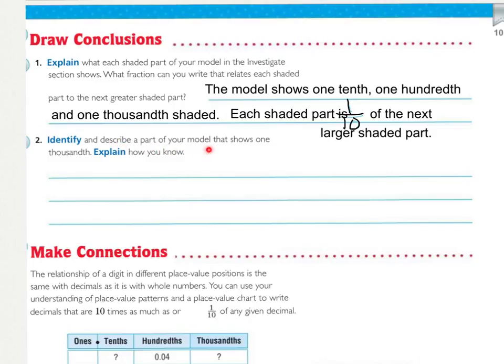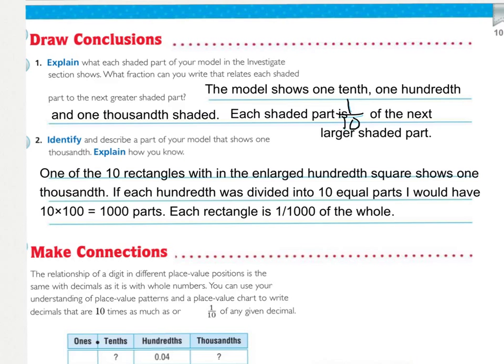Identify and describe a part of your model that shows one-thousandth, and explain how you know. One of the ten rectangles within the enlarged hundredth square shows one one-thousandth. That's the third one you colored. If each hundredth was divided into ten equal parts, I would have ten times one hundred equaling one thousand parts. Each rectangle is one one-thousandth of the whole. The smaller rectangle, the third one you colored, is one one-thousandth of the whole.